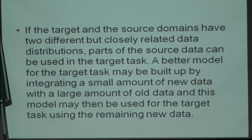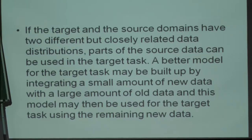In multivariate data analysis we distinguish between training and test data sets. Here, we can make use of a small amount of new data combined with a large amount of old data available in the other source domain data sets. We use this model for the target task using the remaining new data, so you need not use the entire new data for building the classifier rule - you combine a small part with old data from source domains, then apply the rule to the rest.